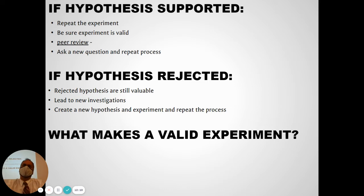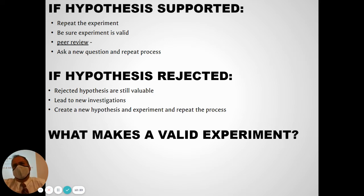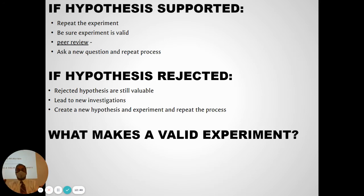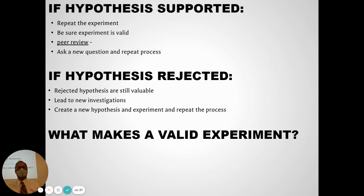Once you're done — you've done your experiment, collected some data, analyzed it — if you supported your hypothesis, one good thing to do is repeat the experiment, because sometimes results are a bit weird. If one student does the pea plant experiment and finds a difference, maybe it's a fluke. But if seven or eight groups do the same experiment and all get the same result, we can be more confident. The more times you can repeat it, the more valid the experiment is.